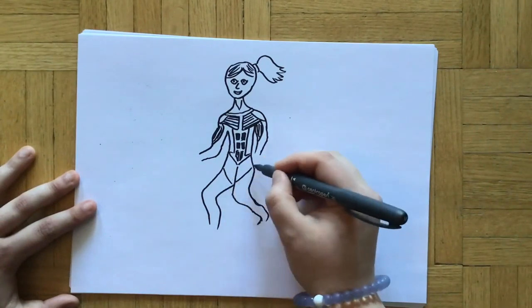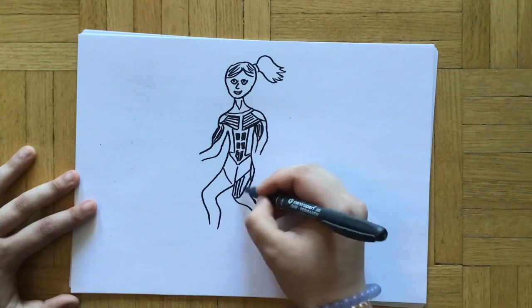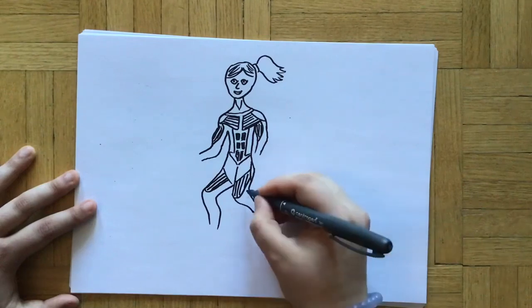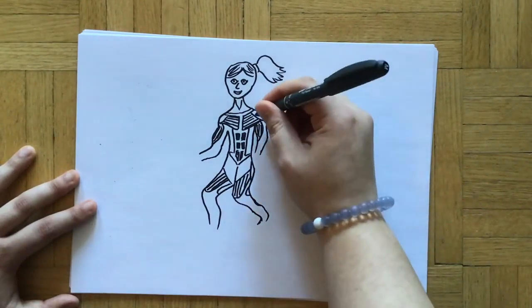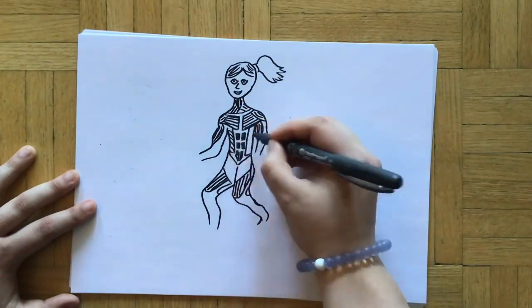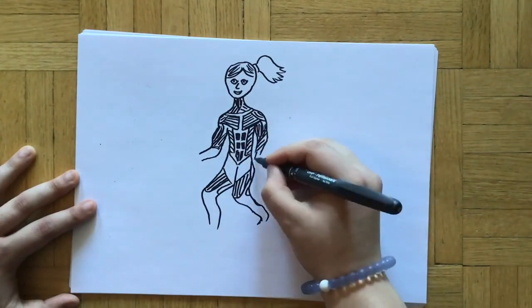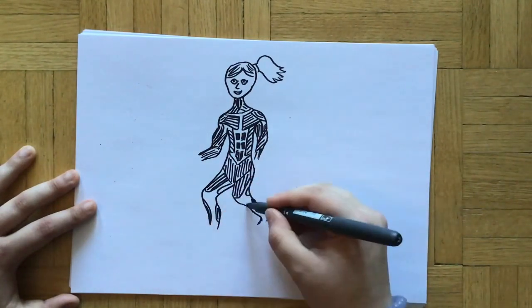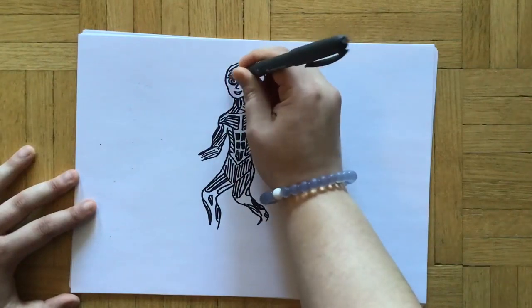Then we've got our quadriceps which are attached to the femur bones, so these are the ones that are on our thighs. They are some of the bigger muscles in our body. We've got plenty of muscles everywhere. Basically everywhere we can move, there is a muscle that enables that movement. So we are genuinely quite full of muscle.